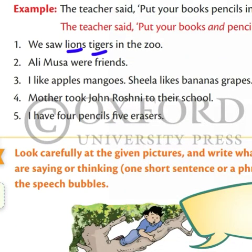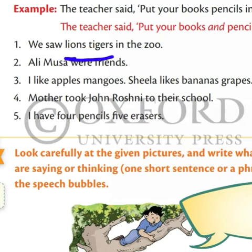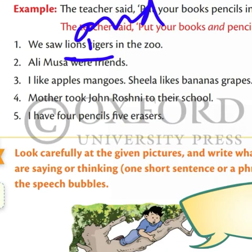Dear students, you have to solve this exercise. We saw lions and tigers in the zoo. Between two words, between these two words, we will use 'and' here. And what is 'and'? 'And' is a joining word.